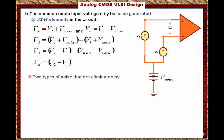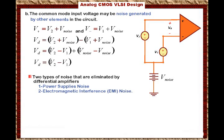There are two types of noise eliminated by the differential amplifier. The first is power supply noise — the power supply creates a lot of noise in the circuit, and since that noise is common to both inputs, the differential amplifier cancels it. The second is electromagnetic interference, or EMI, which is created by the magnetic field induced between adjacent components, and the differential amplifier is able to cancel that EMI noise as well.